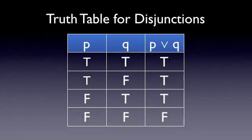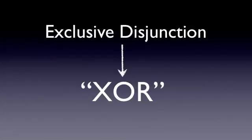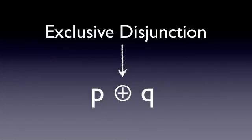Now it's very important not to confuse a disjunction with another type of OR, known as the exclusive disjunction, or the exclusive OR, or XOR. An exclusive OR is represented with this symbol.